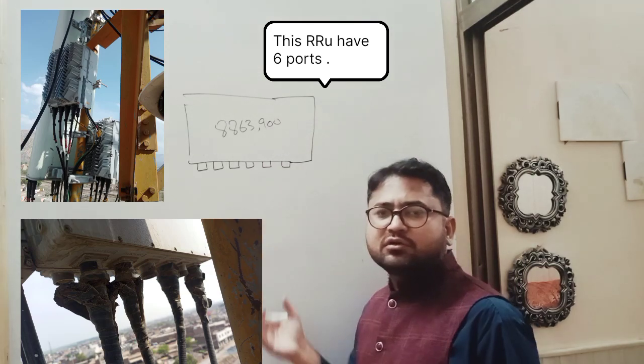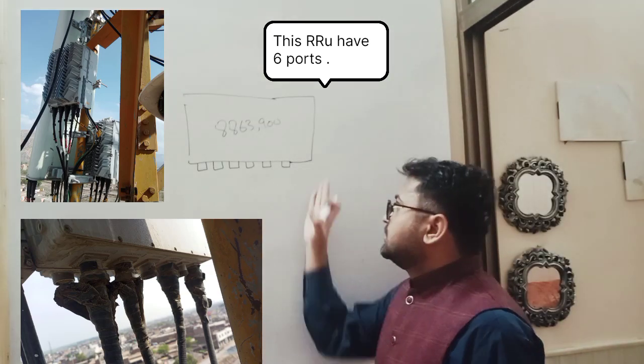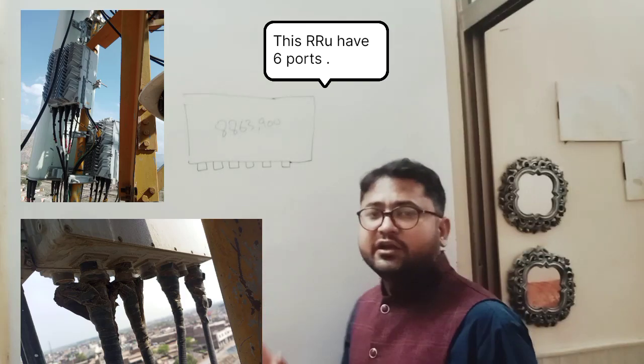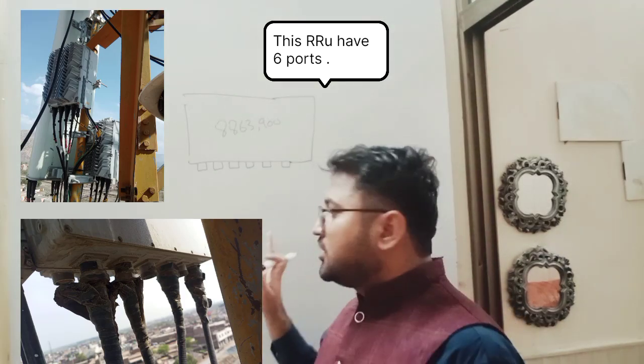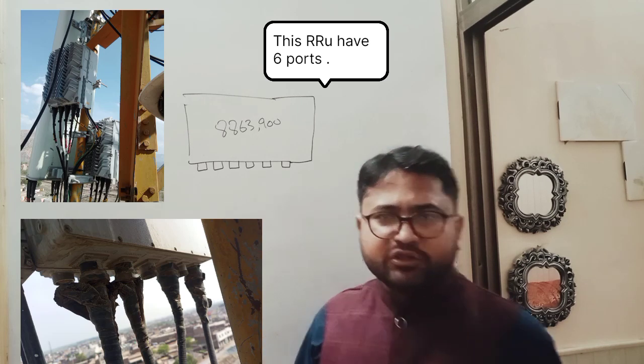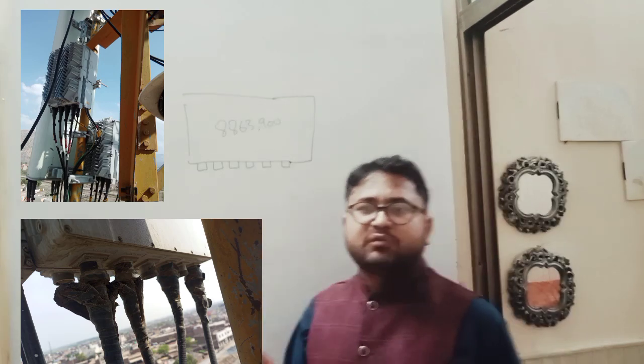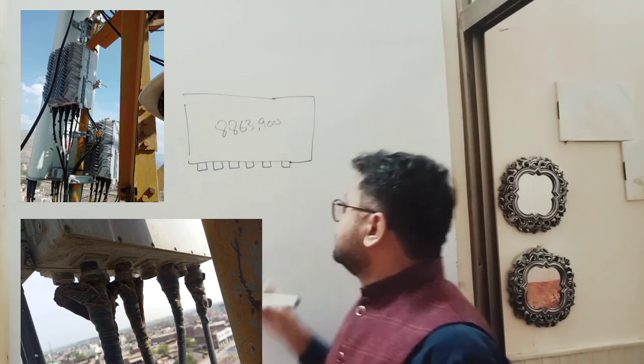8863900 is for 2G or LTE technology. This RRU can support both technologies. It can support 2G and also L900. This RRU is using 2G technology today, and we are also using the LTE 900 MHz frequency band in mixed mode. This is 2G plus L900.